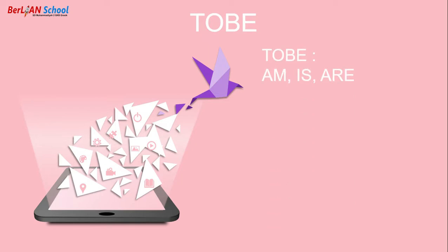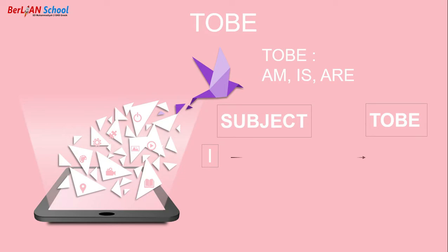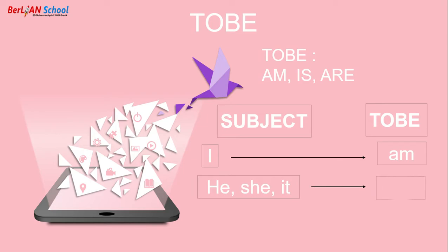There are three forms of 'to be': am, is, and are. When do we use each one? It depends on the subject. If the subject is 'I', we use 'am'. If the subject is 'He', 'She', or 'It', we use 'is'. If the subject is 'You', 'They', or 'We', we use 'are'.